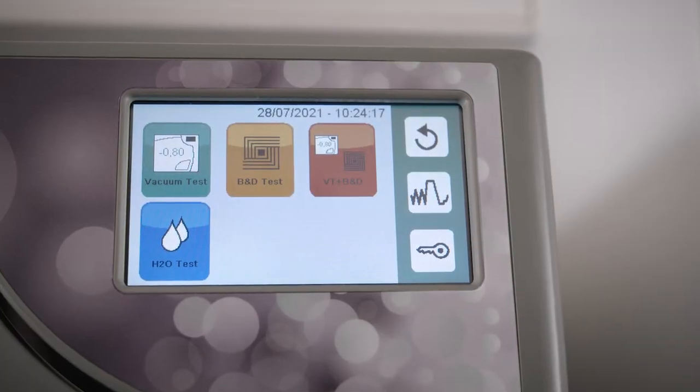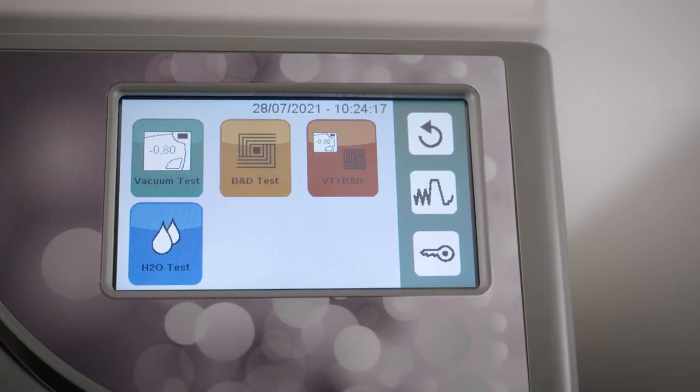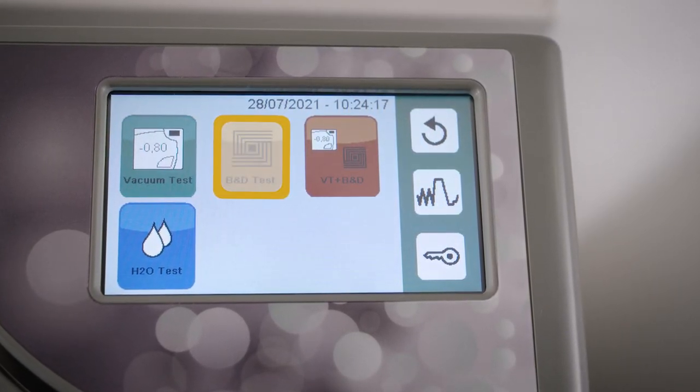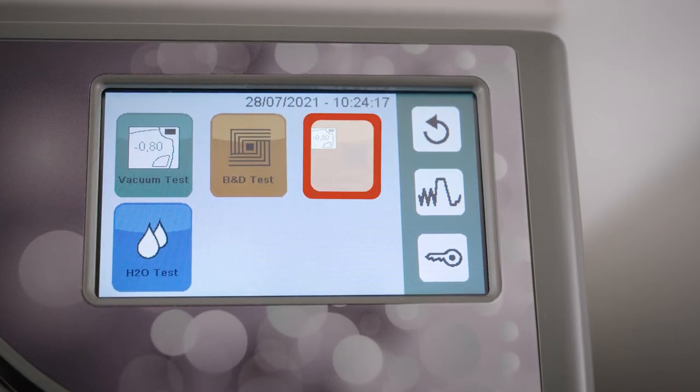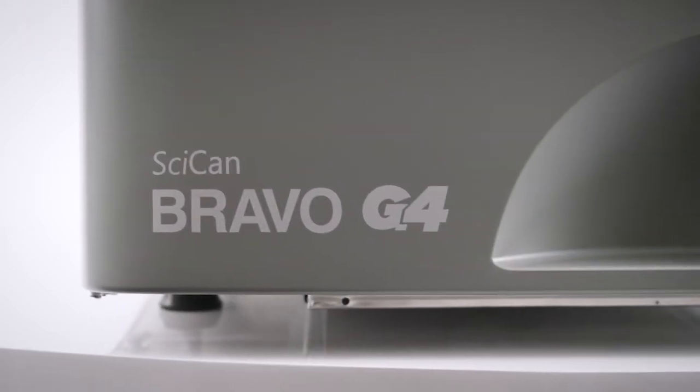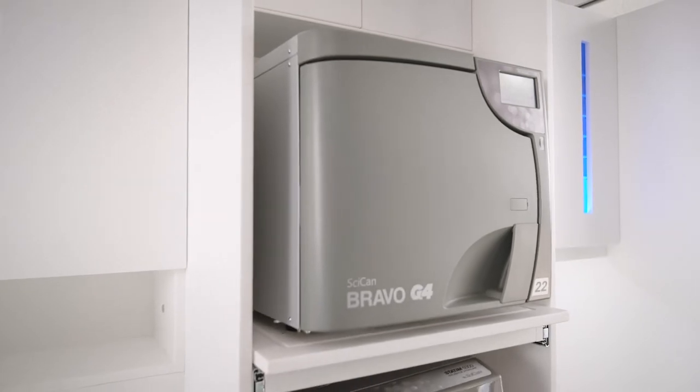The Bravo G4 offers three test cycles to periodically check the unit's effectiveness: a vacuum test, a Bowie-Dick test, and a cycle that allows the vacuum and Bowie-Dick test to be run back-to-back. Follow the instructions in the operator's manual for properly performing these tests. Please follow local guidelines for the required frequency for performing all sterilization monitoring tests.